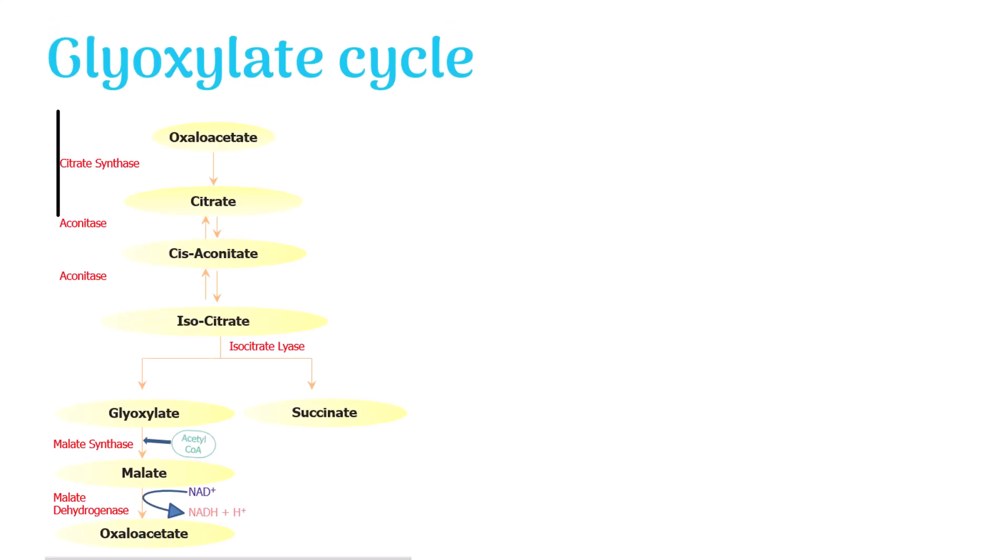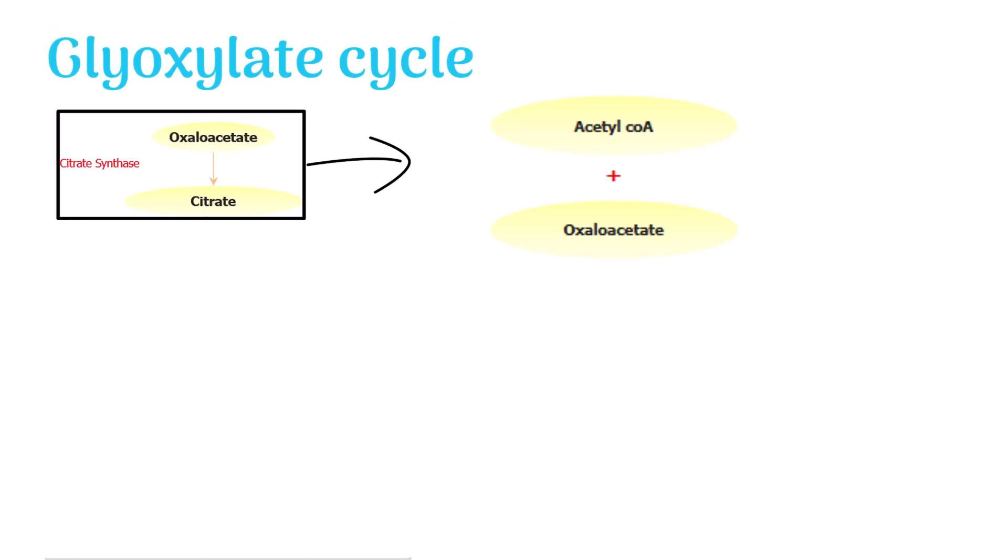Glyoxylate cycle. In the first step, acetyl-CoA and oxaloacetate join together to form citrate. Citrate synthase enzyme catalyzes this reaction.